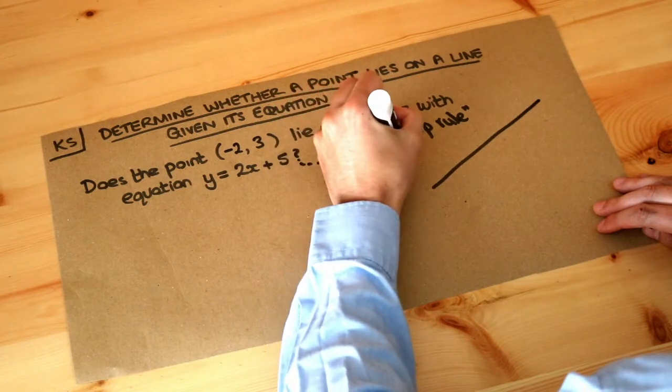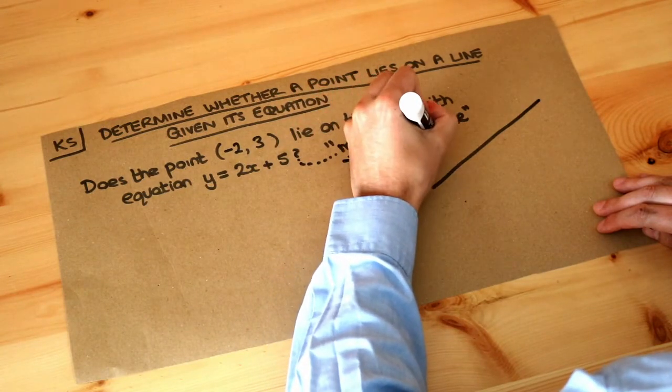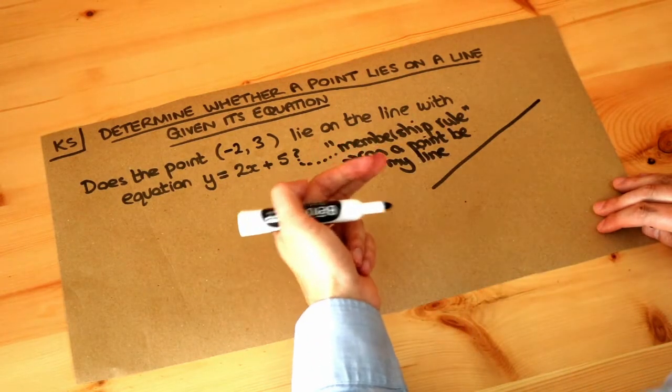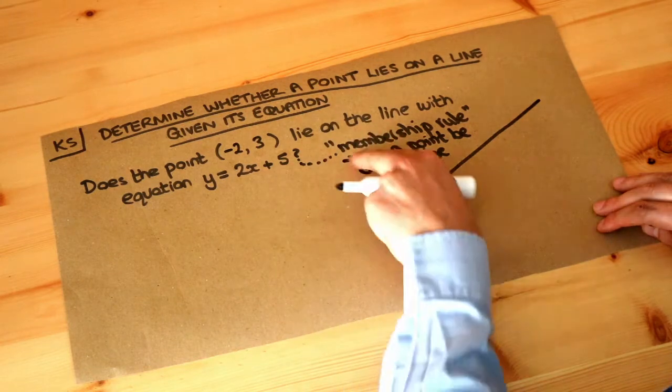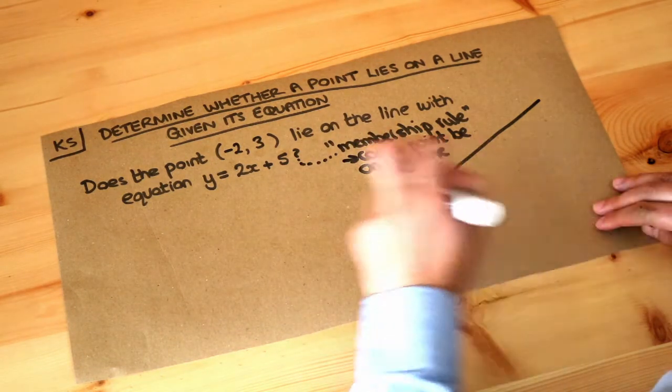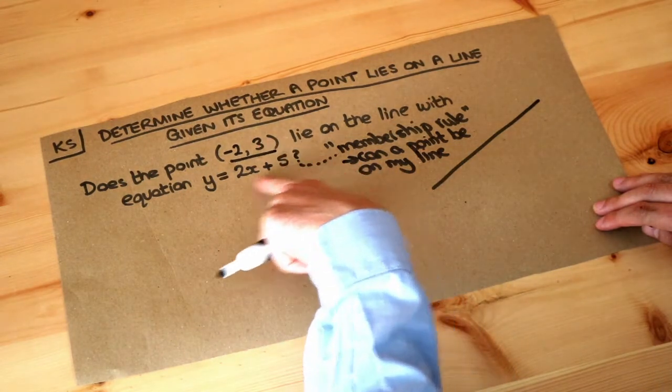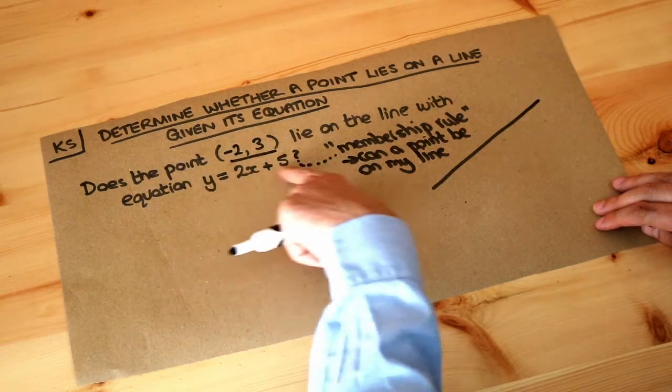Can a point be on my line? If the coordinates of that particular point obey this rule, then it is on the line. If it doesn't obey the rule, then it's not on the line. So we're going to take this point and see if it obeys this rule, this equation for the line.